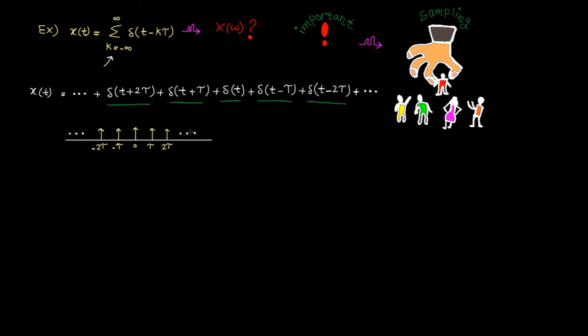In the signal processing books, this is so-called impulse train, as it's like a train of impulses one after another. It's clear that the period here is T, as the impulse repeats every T units.